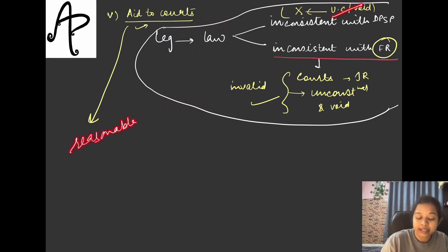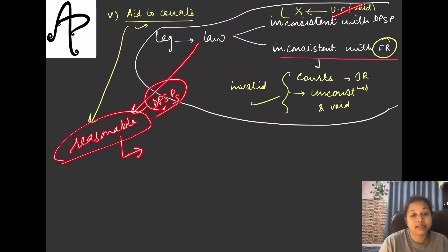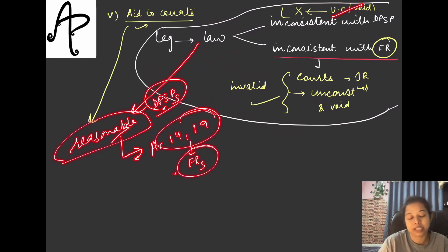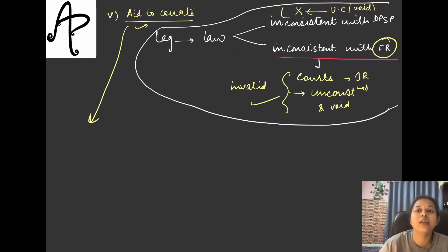If a law is moving towards a directive principle, it can be declared reasonable by the court. Under Articles 14 and 19 — the fundamental rights — we can establish its reasonableness. If the court declares any law to be reasonable, it cannot be challenged as unconstitutional. Therefore, the DPSPs are helping the court in determining the reasonability, validity, or constitutionality of a law.